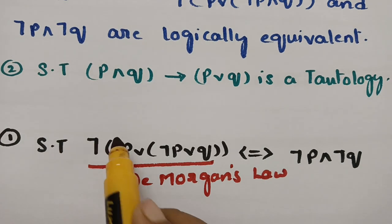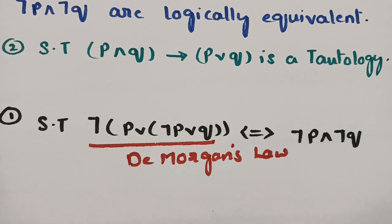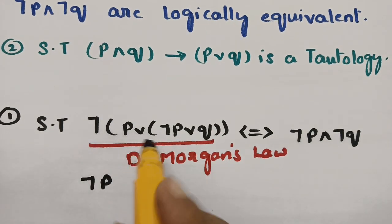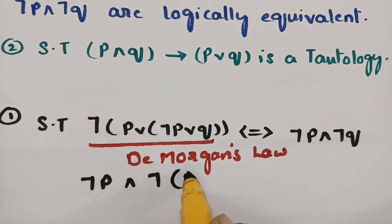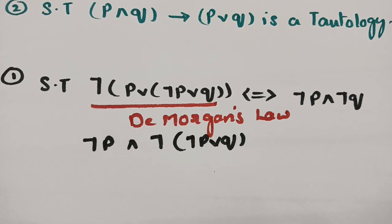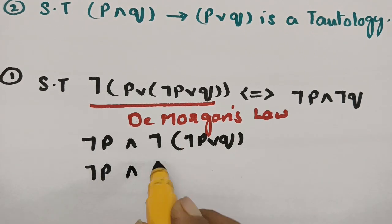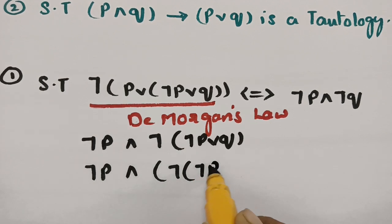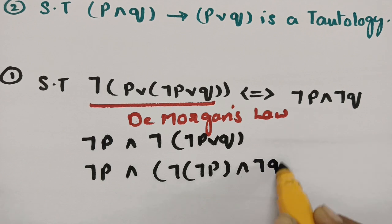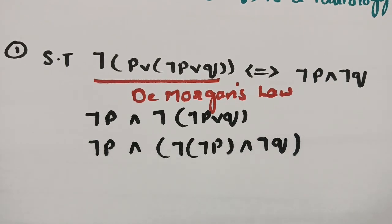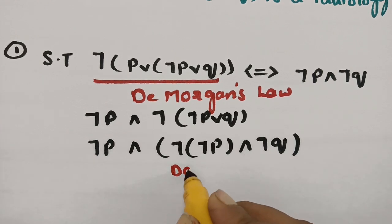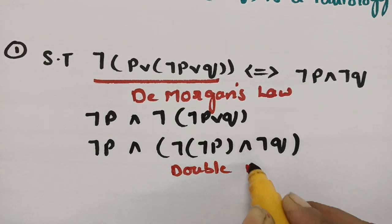Sending the negation inside gives negation P. Then this 'or' becomes 'and', resulting in: negation P and negation(negation P or Q). Next, I apply De Morgan's law again, sending this negation inside: negation P and (negation of negation P and negation Q). This gives us a double negation, so I will apply the double negation law.